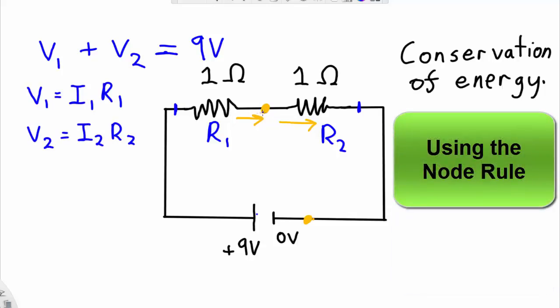Then, using conservation of charge or the node rule, I know that the current going across resistor 1 must be equal to the current going across resistor 2, so I1 equals I2.